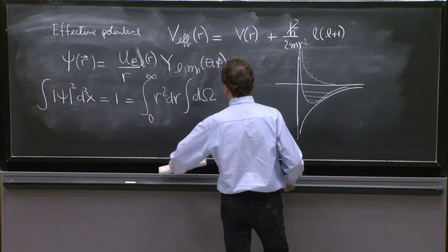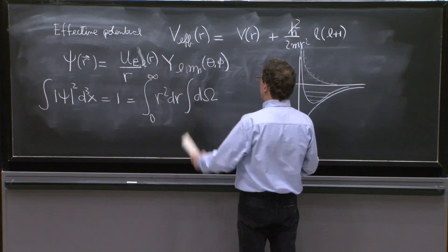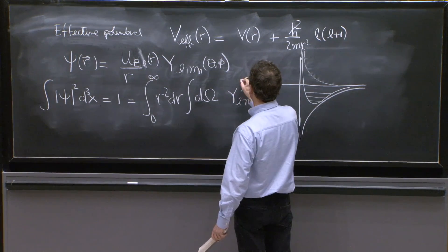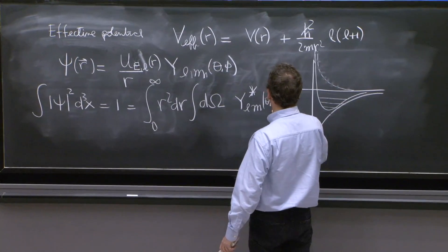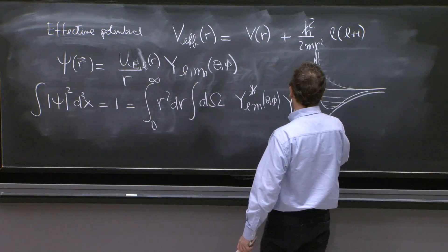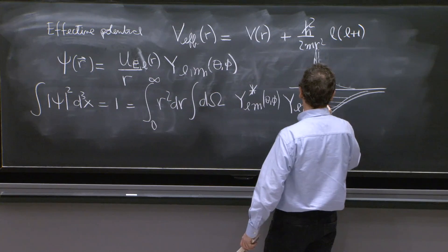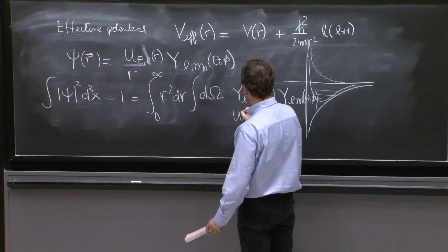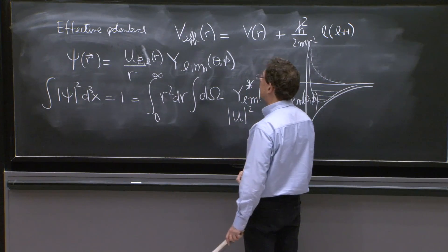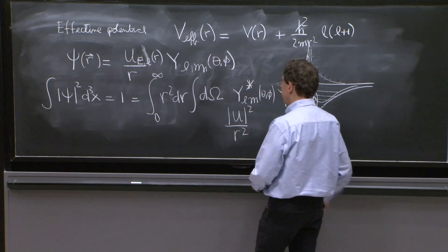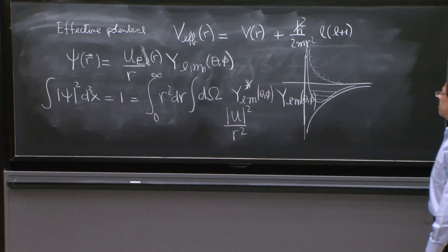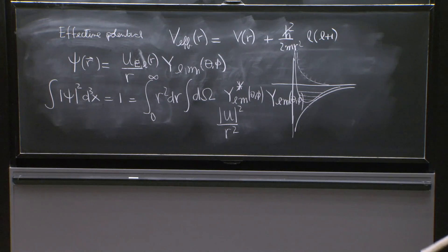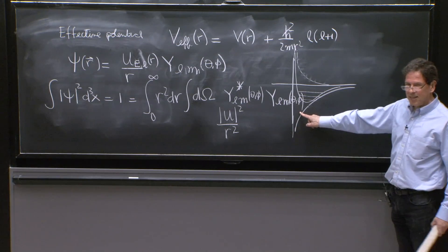So let's do the arithmetic here. We have a Y_lm* of theta and φ, a Y_lm of theta and φ. We have a u² and an r². Poor graph. But anyway, you can read it.